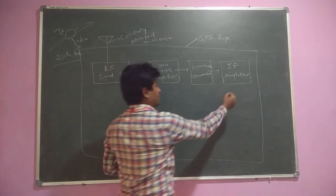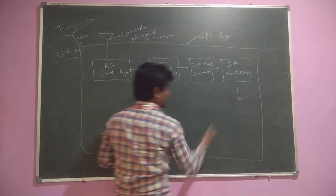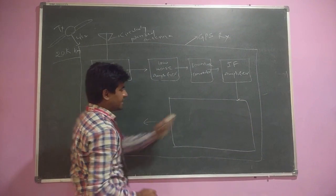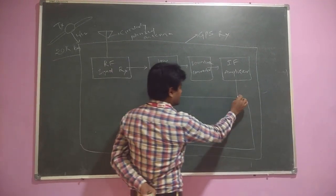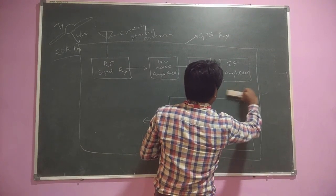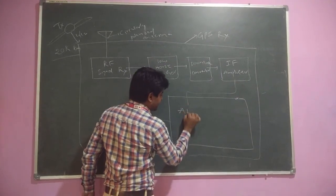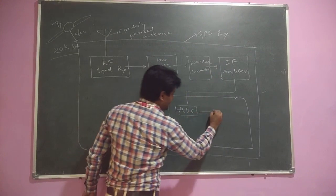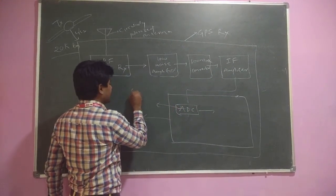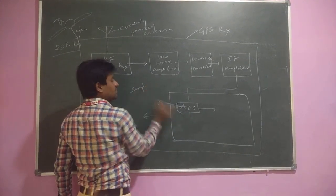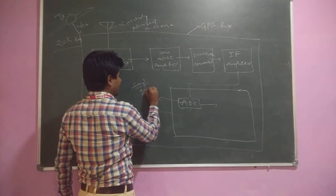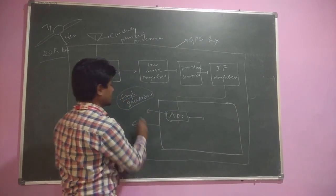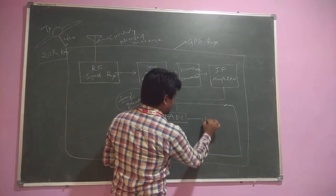We amplify the intermediate frequency signal using an IF amplifier. Whatever IF amplifier signal we obtain, we send it to the main processing block. The signal is then sent to an ADC converter where the analog signal is converted into a digital signal. In the ADC, sampling of the particular signal is performed and the signal is quantized.